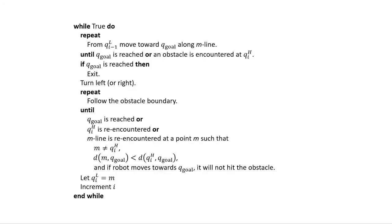This is the algorithm for Bug 2. As you can see, it looks very similar to the Bug 1. But the main difference is the M line. Whenever the robot is moving around the obstacle and it re-encounters the M line, it immediately creates the lead point and goes towards the goal again.